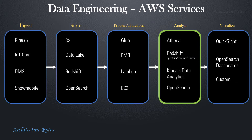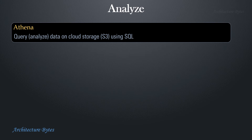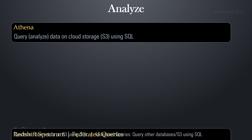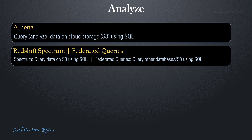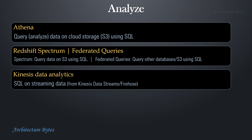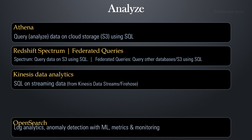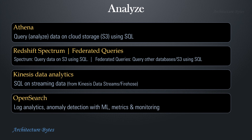Analyze: Athena is a serverless analytic service which can query petabytes of data on S3 using SQL. Redshift Spectrum can be used for fast, complex analysis of data on S3 using SQL. Federated queries in Redshift can be used to query and analyze data in operational databases, data warehouses, and data lakes using SQL. With Kinesis Data Analytics, you can perform real-time analytics on streaming data using SQL. Using OpenSearch, you can do log analytics and anomaly detection using machine learning, metrics, and monitoring.